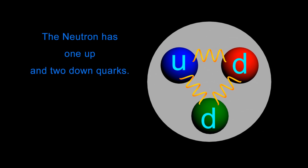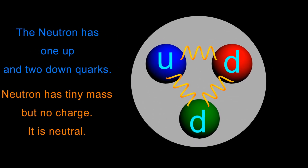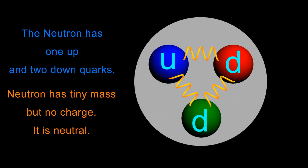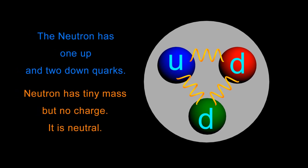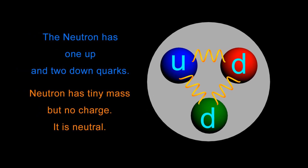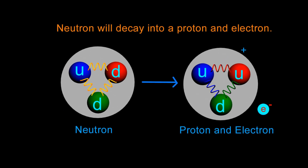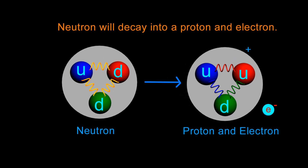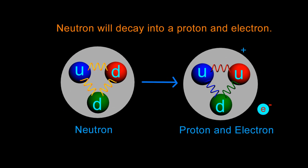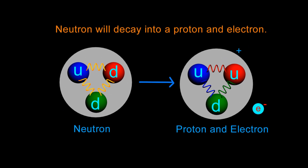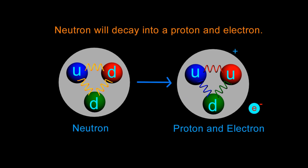Neutrons have no charge. They are neutral, but they are also very unstable. In nature, you won't find neutrons existing on their own for very long. In the physical world, neutrons quickly decay through a process called beta decay, in which they emit an electron and become a positively charged proton with an orbiting electron, which we call an atom.